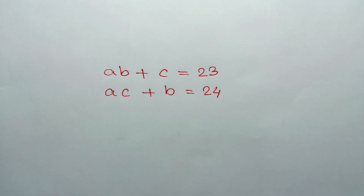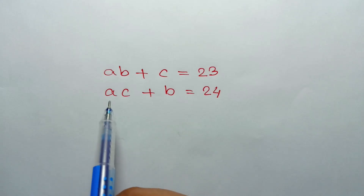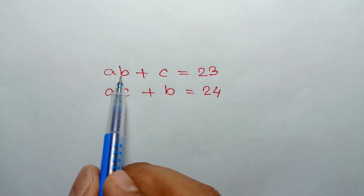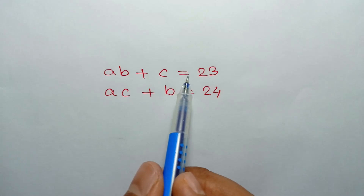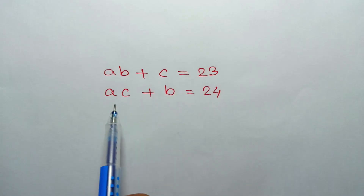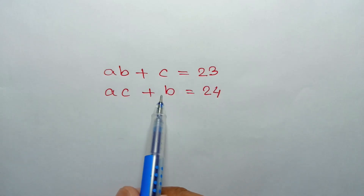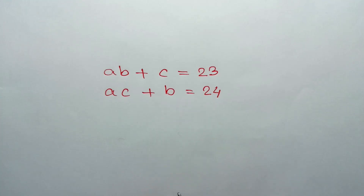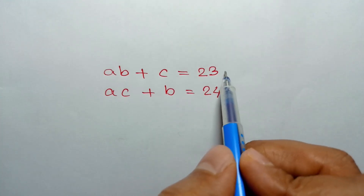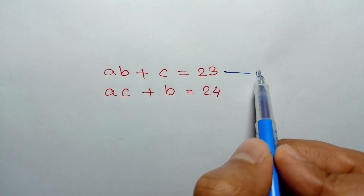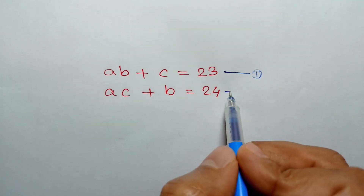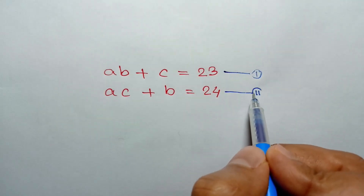Hi everyone. In this video I am going to show how to find the integer solution of this system of equations: AB plus C is equal to 23 — let's call it equation number 1 — and AC plus B is equal to 24, equation number 2.